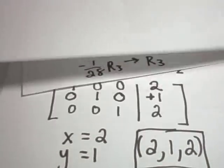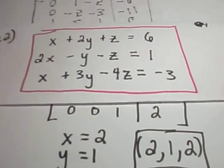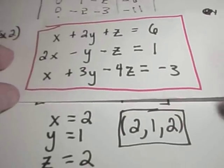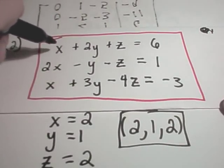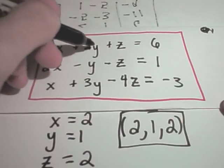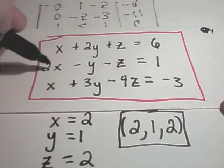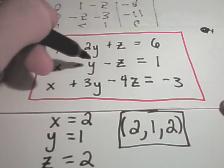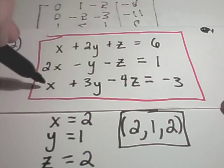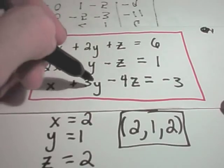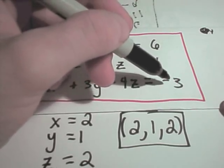And you can go back into our original, it never hurts to check if you're taking a test or something. This is something, if I wasn't running out of time, I would plug it back in to make sure I had my right answer. If you plug 2 in for x, 1 in for y, 2 in for z, you will get 6 out. Same thing in the second row, if you plug in 2 for x, 1 for y, and 2 for z, you'll get 1 out. Third row, if you plug 2 in for x, 1 in for y, 2 in for z, you will also get negative 3 out.